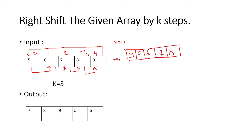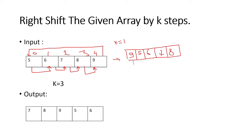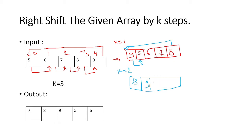We have to do 3 iterations as k value is 3. We will be doing the same procedure: shifting all the elements and the last element will again shift to the 0th position. In the 2nd iteration, we will get 8 as the 0th element, then 9, with all elements shifting right — 5, 6 and 7.